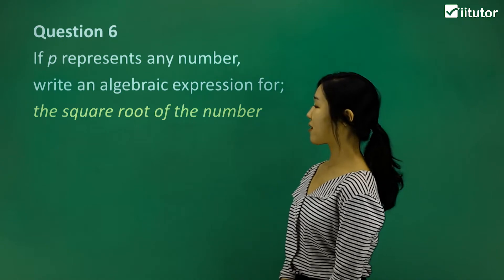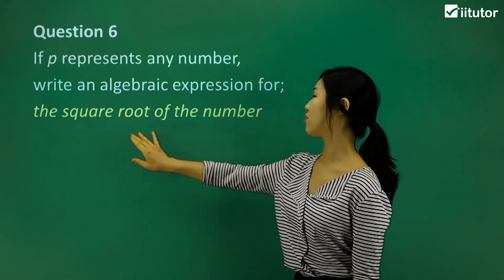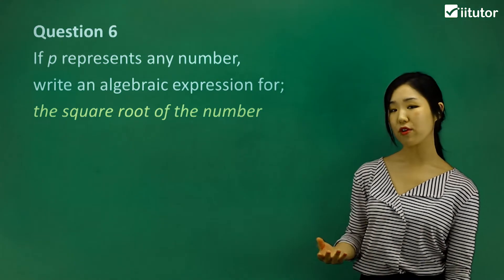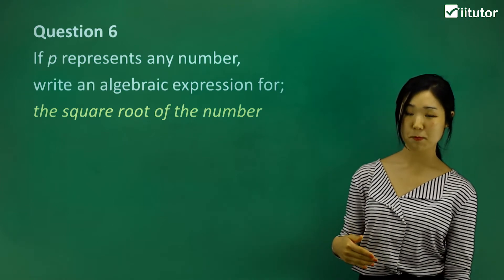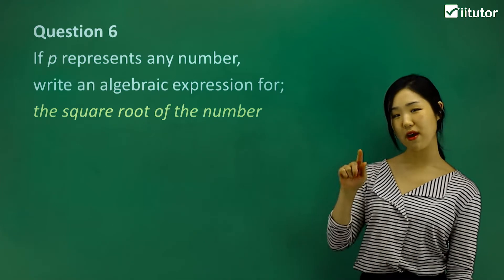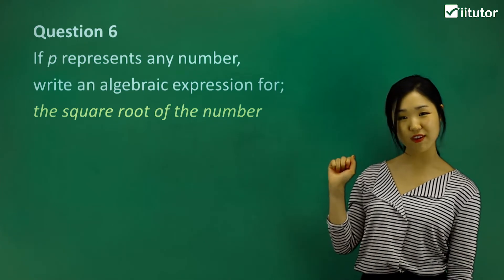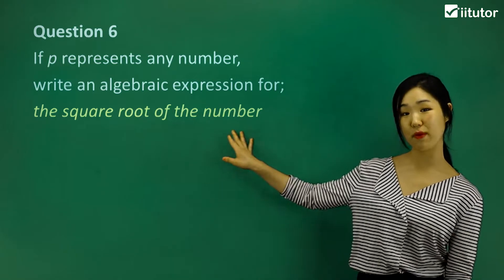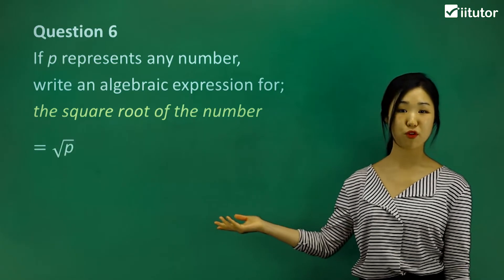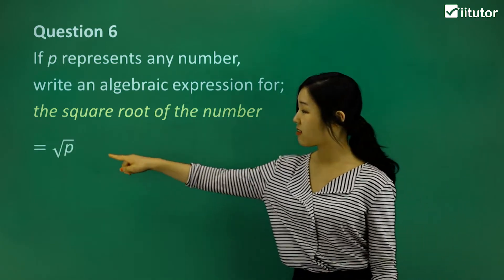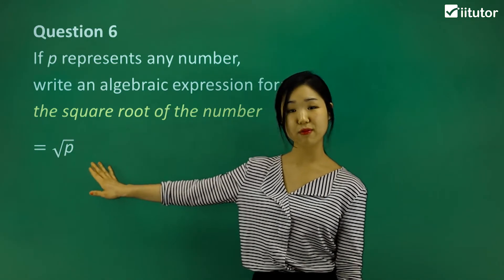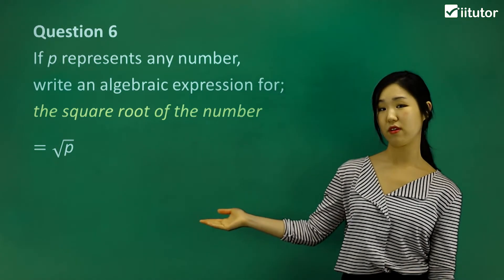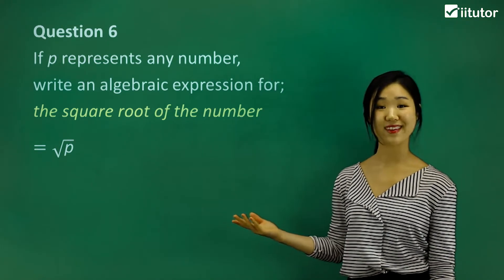Question six: if p represents any number, write an algebraic expression for the square root of the number. Square root is the opposite of squaring. You may have seen the root notation — the square root of any number p would just be root of p. This symbol means square root, which is the opposite of squaring.